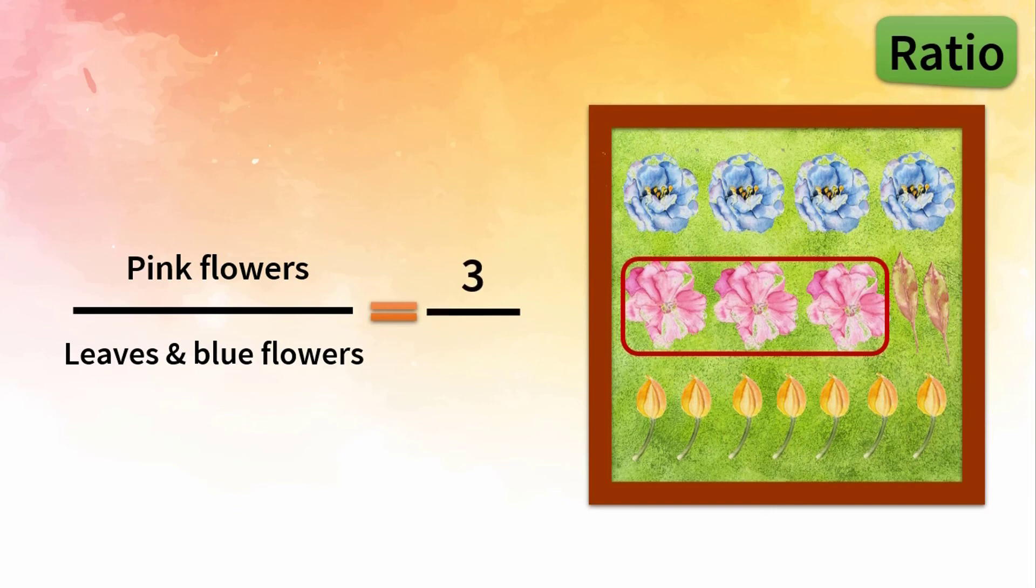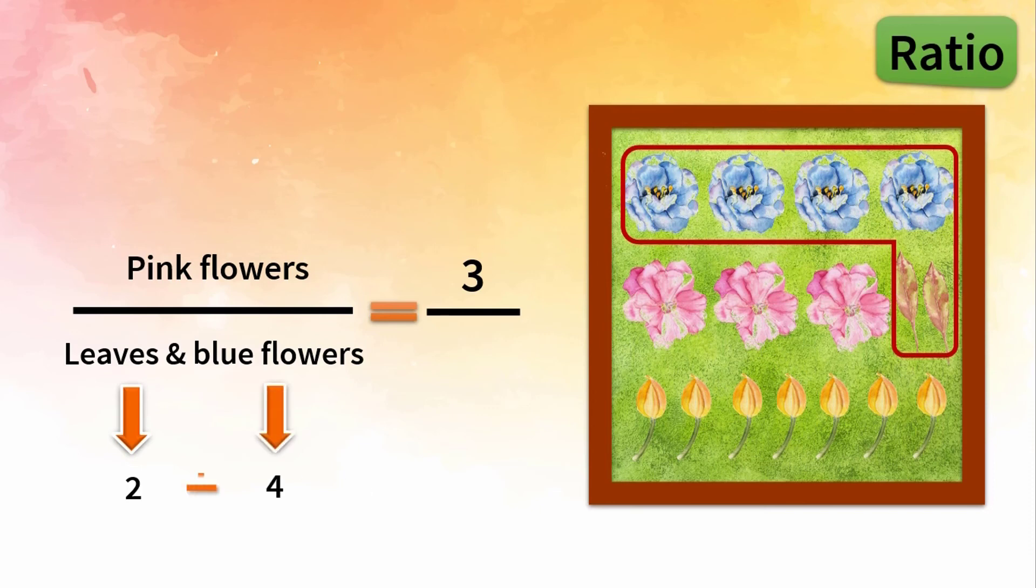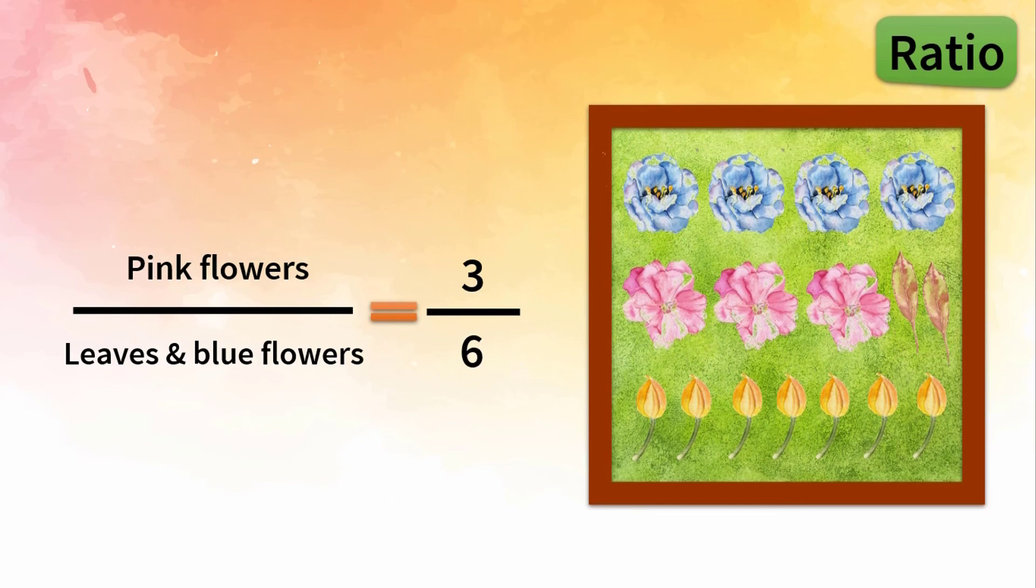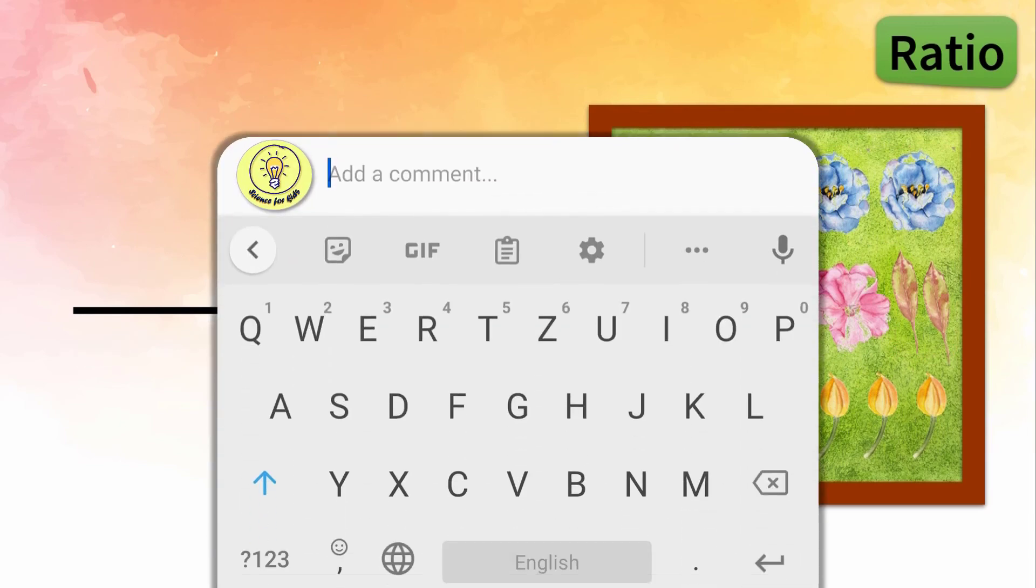Then 2 leaves plus 4 blue flowers equals 6, and we write 6 in front of leaves and blue flowers. Therefore, the ratio of pink flowers to leaves and blue flowers is 3 to 6.